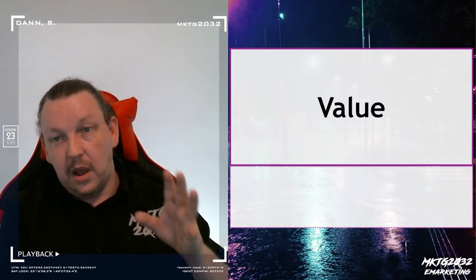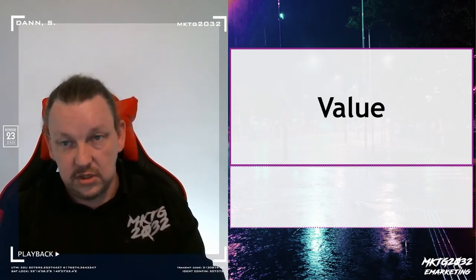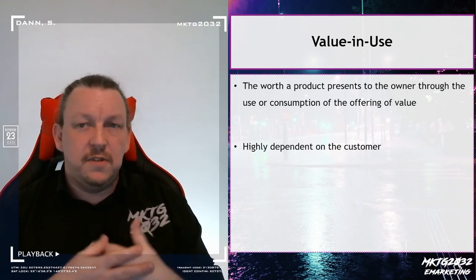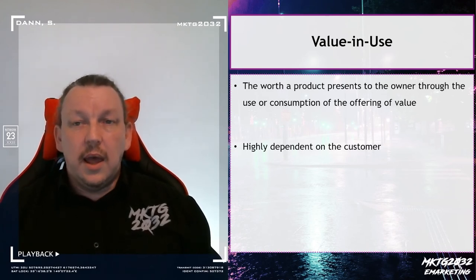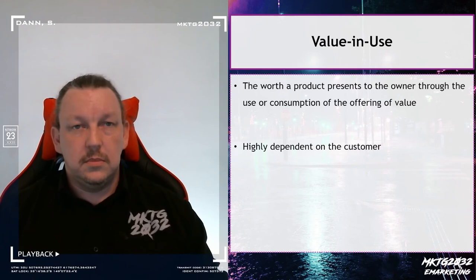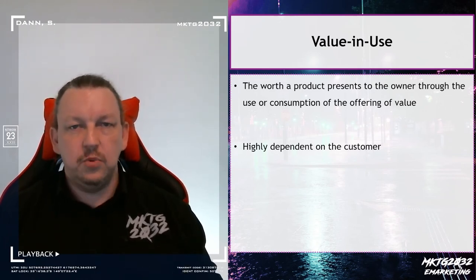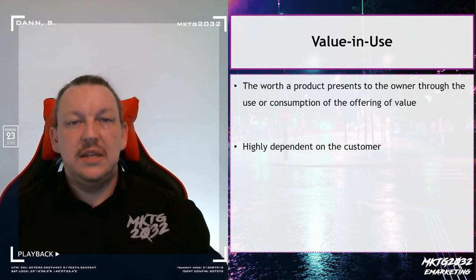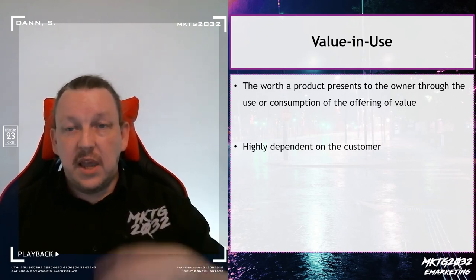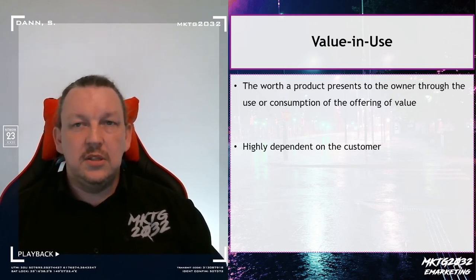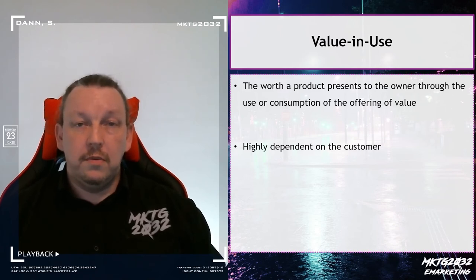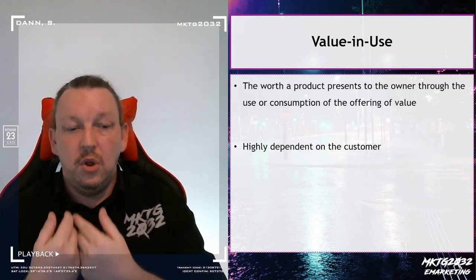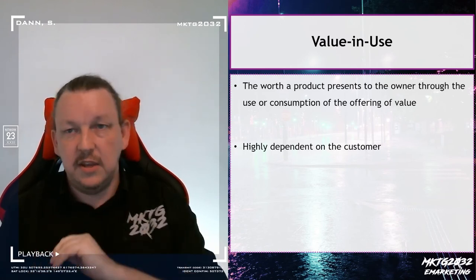We've talked about co-creation of value. I'm going to talk about a couple of different ways in which value gets created. The first is fundamental to co-creation: value comes from the use. Nothing has inherent worth until that worth is activated. The best case example is always the umbrella at home when it's raining — the umbrella has no value if you're standing in the rain getting wet. Value comes from the use of the offer, created through use.